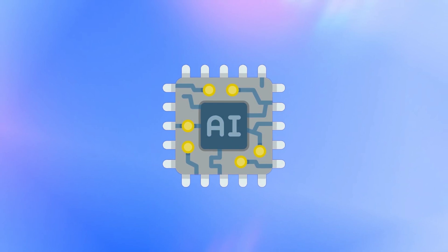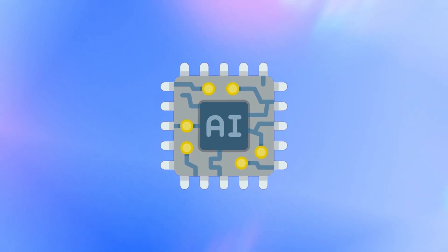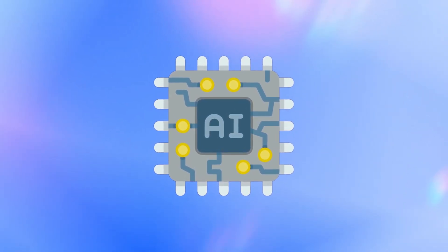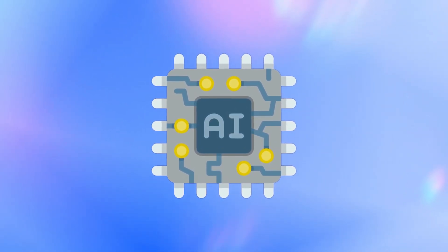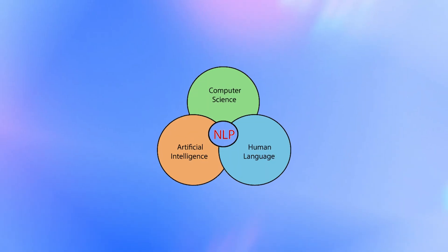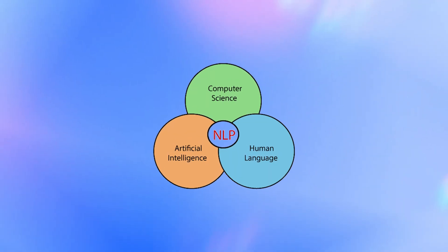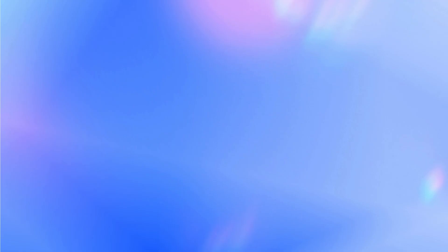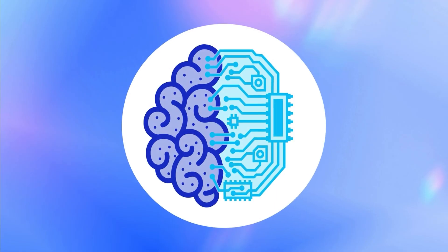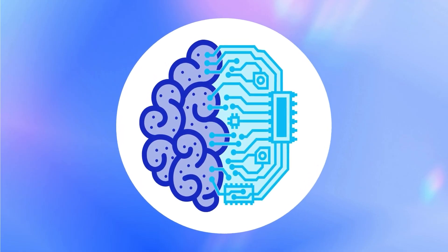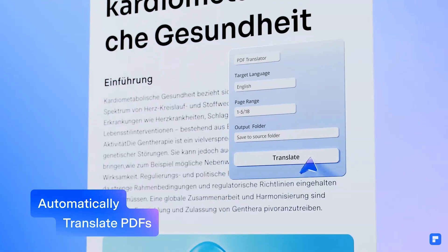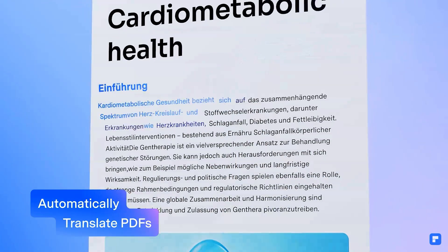On the other hand, AI technology is a completely different story. AI doesn't just swap words — it understands language. Thanks to natural language processing technology, AI can grasp the meaning behind words, the relationships between concepts, and the overall context, just like humans do. And this is exactly what PDFElement's AI-powered translation is all about.